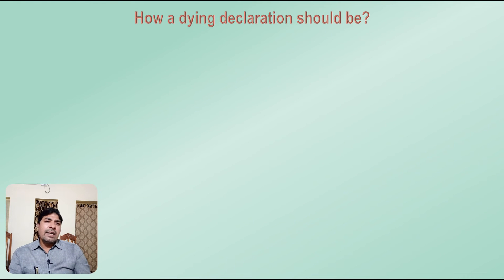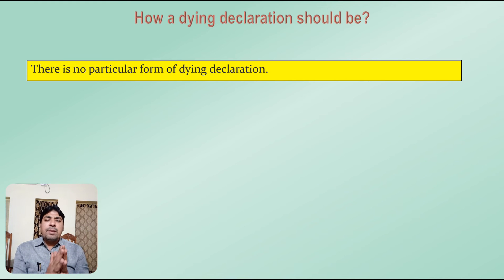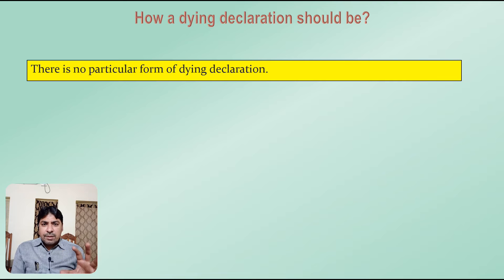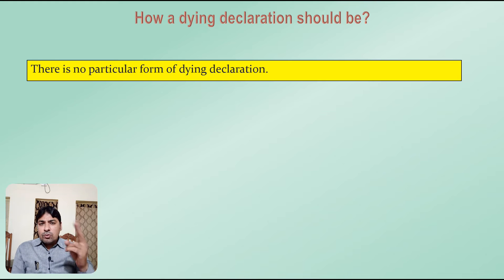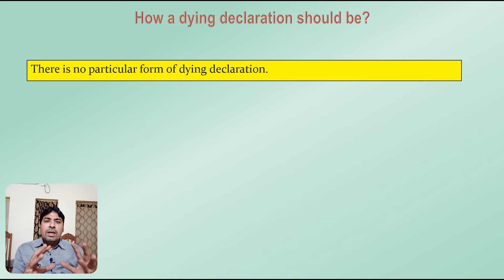How should a dying declaration be? There is no particular form of dying declaration. But in short we can say that a statement made by a person where the person mentions the reason of his death — such a statement is a dying declaration. Also, if the person in his statement mentions the circumstances which resulted in his death, that is also a dying declaration.